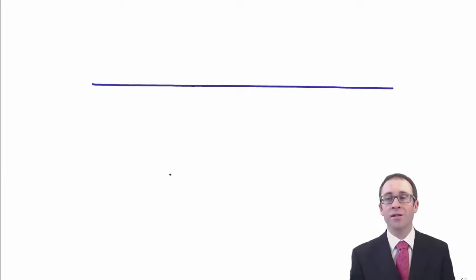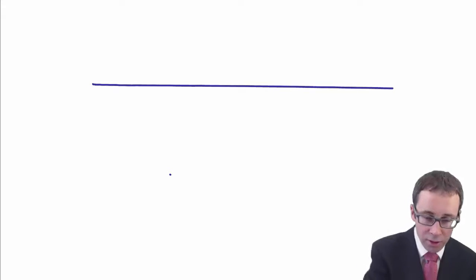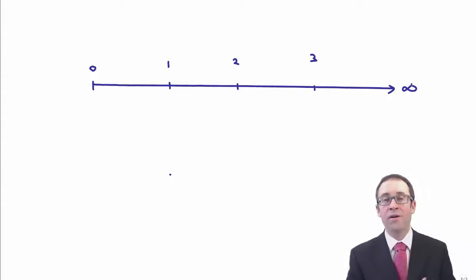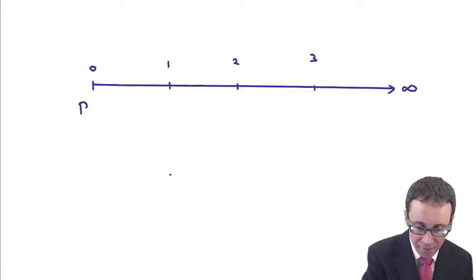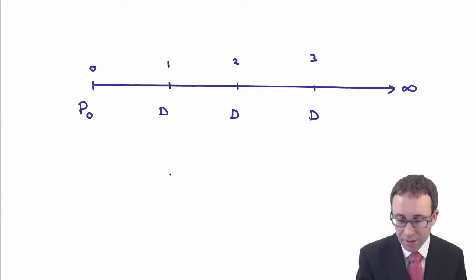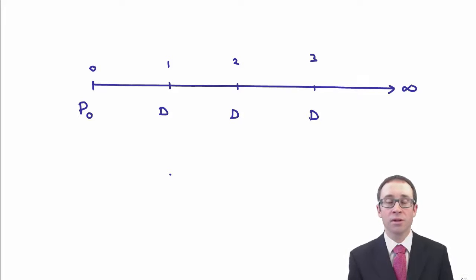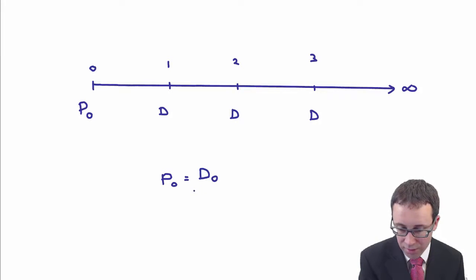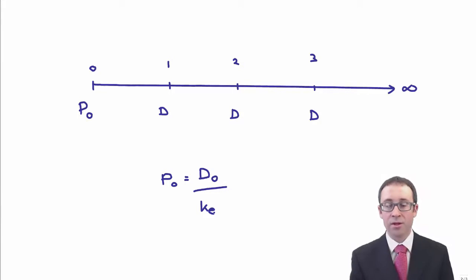Let's look at the Dividend Valuation Model first of all without any growth. We'll draw up a timeline. Today is T0, then one year's time, two years, three years, and it will go on forever into infinity. Today we have the price P0, and then in one year's time we will have a dividend — the same dividend every single year for years one, two, and three, if there is ultimately no growth. So what you have there is essentially a nice, simple perpetuity. To work out the price, you take your cash flow, which is your dividend, divided by your discount rate — the cost of equity — as that is what we discount those dividends at.